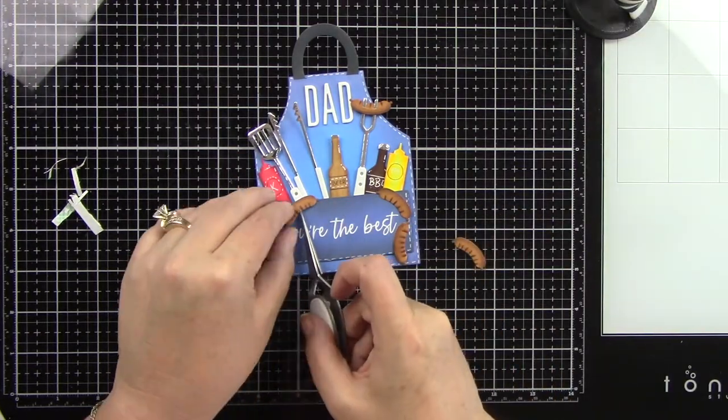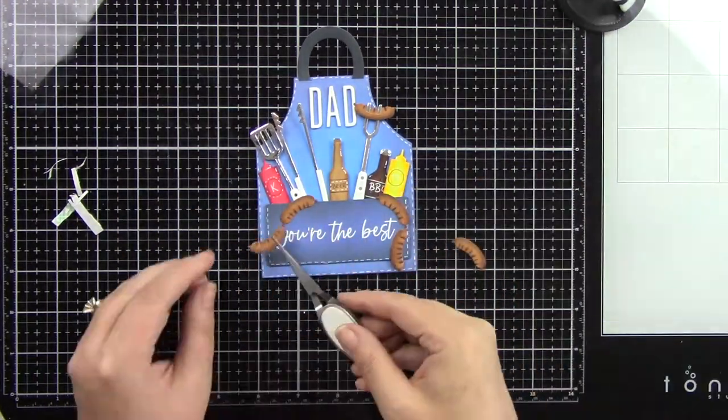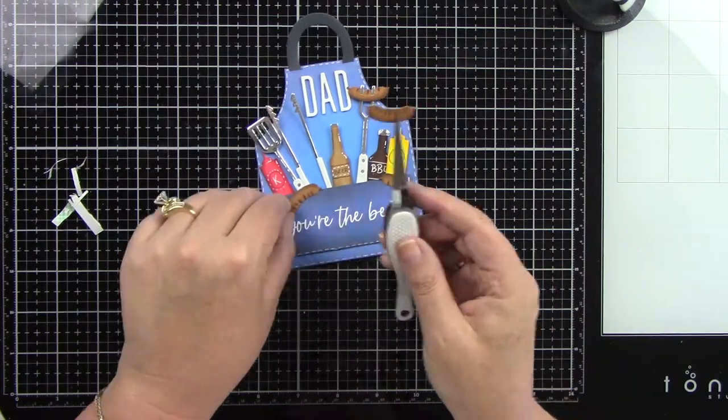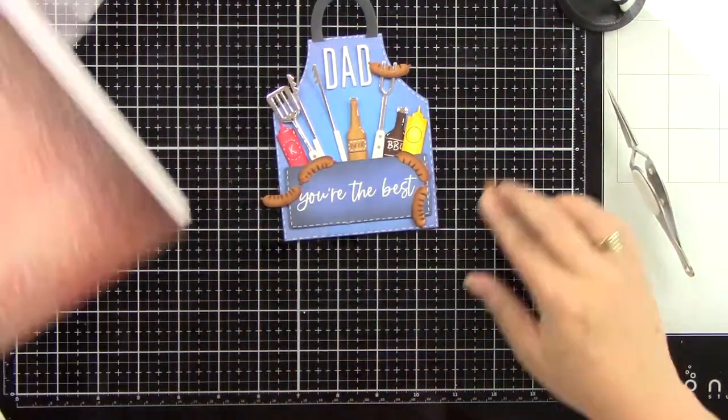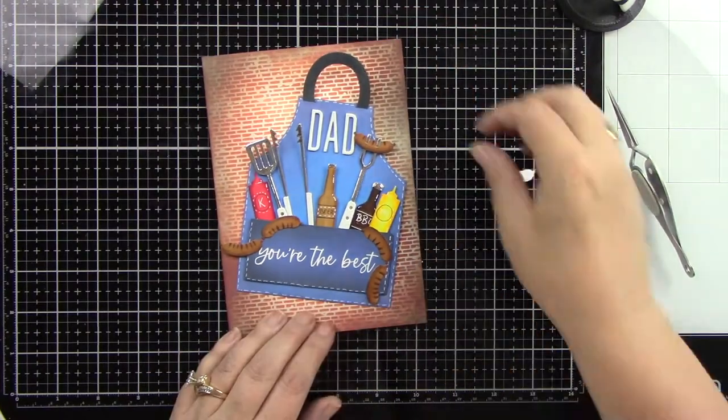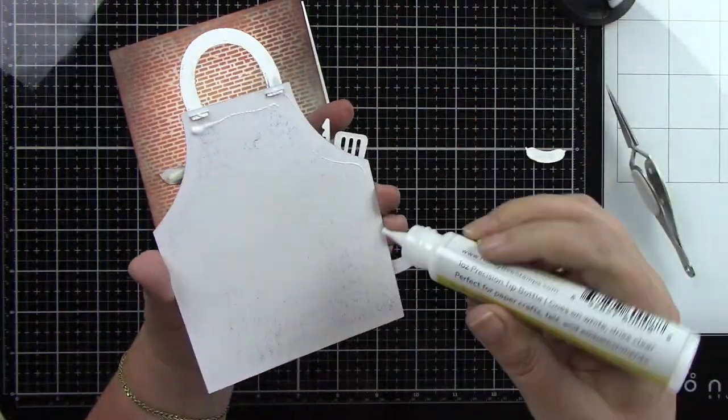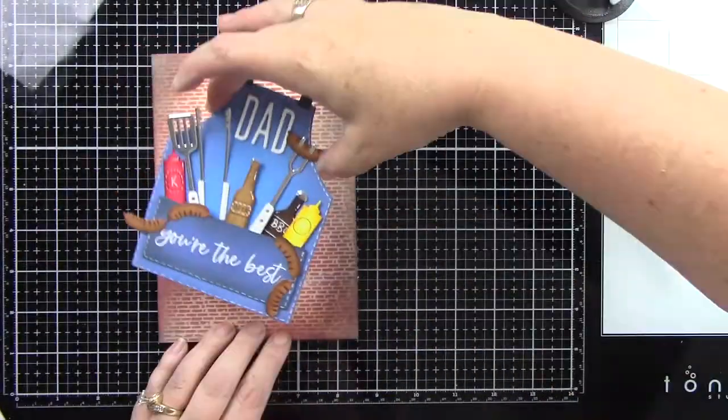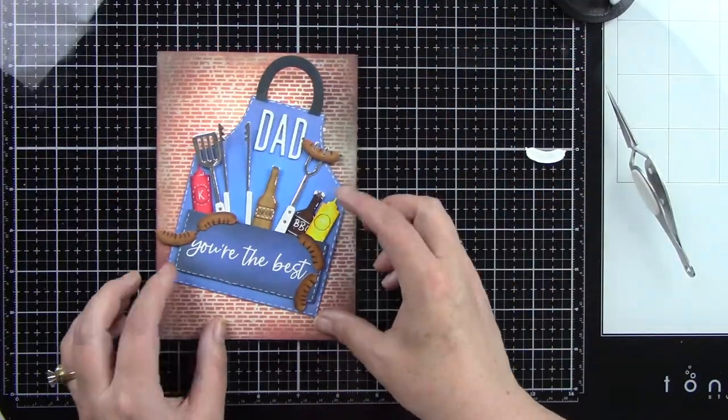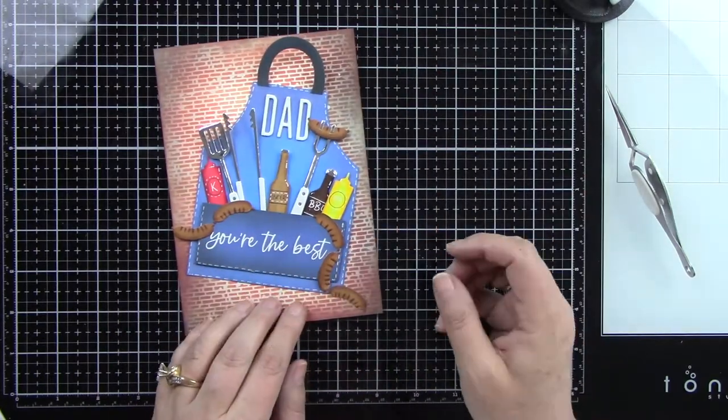I'm going to glue the first ones on here, and I'll glue that final one on once I have this apron adhered to the background. I did not want to cover up my sentiment, so I just kind of made it flow around the sentiment there. I'm going to adhere this down kind of on a fun angle, which I think is really cute, on this great brick background.